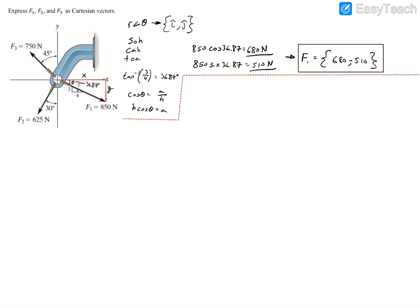Alright, now force F2. We know force F2 is going to have a vector pointing to the left, and then the next vector is going to point down. And I like to get the angle, again, from the X axis, so what is this angle here? Well, we know that we have 90 degrees in the entire quadrant of quadrant 3, and we lose 30 degrees to this angle here, so therefore this must be 60 degrees in here.